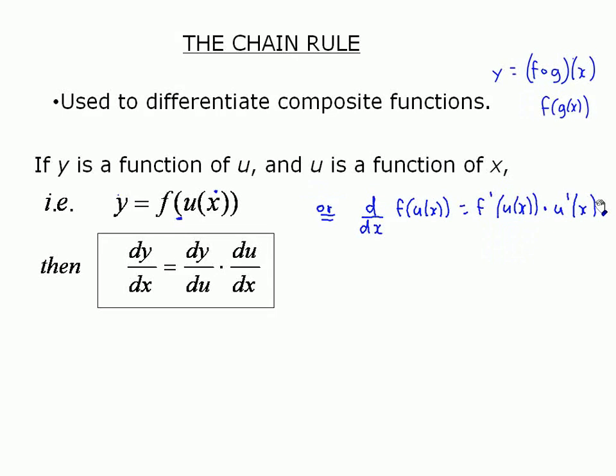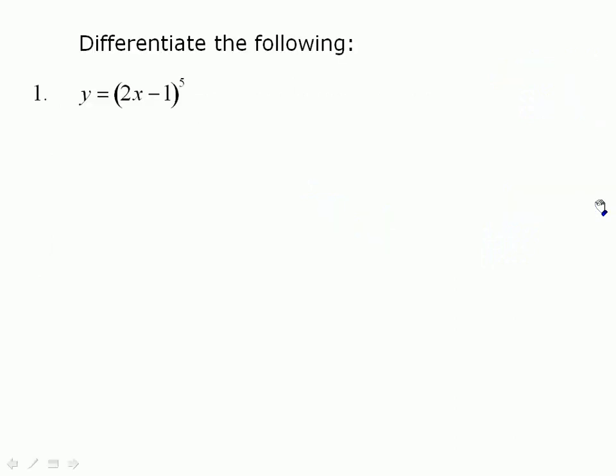The chain rule is used in any situation where there is more than one operation in play. For y equals (2x − 1)^5, you might not think too much about how to differentiate it — you could expand it, multiply it by itself five times, and deal with it as a polynomial. But there are really two operations: you're taking x, multiplying by 2 and subtracting 1, and then raising that expression to the exponent of 5.